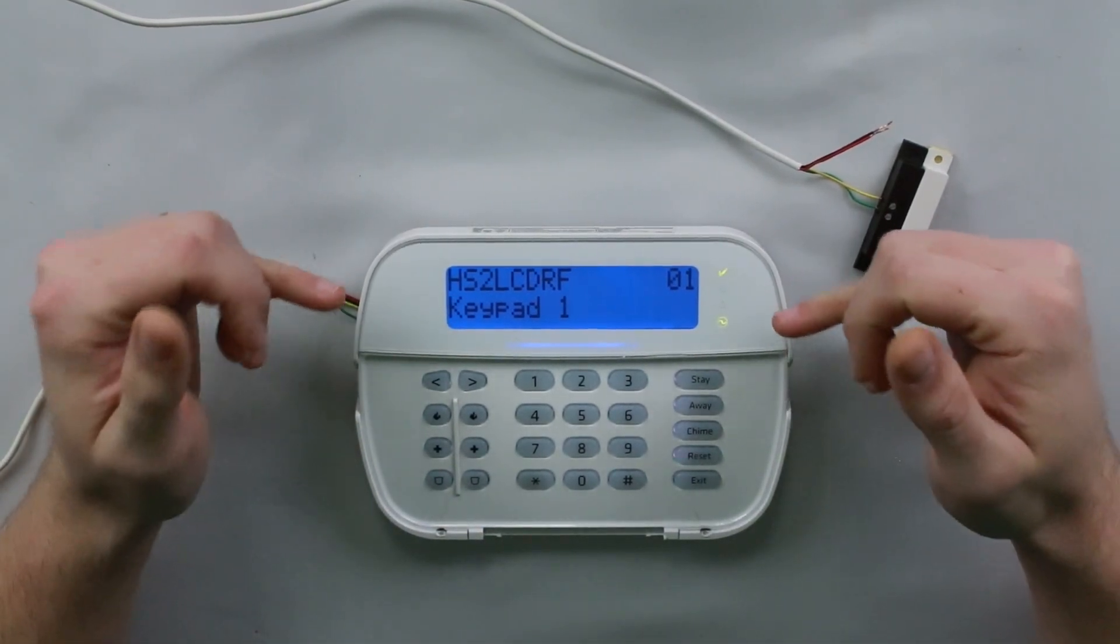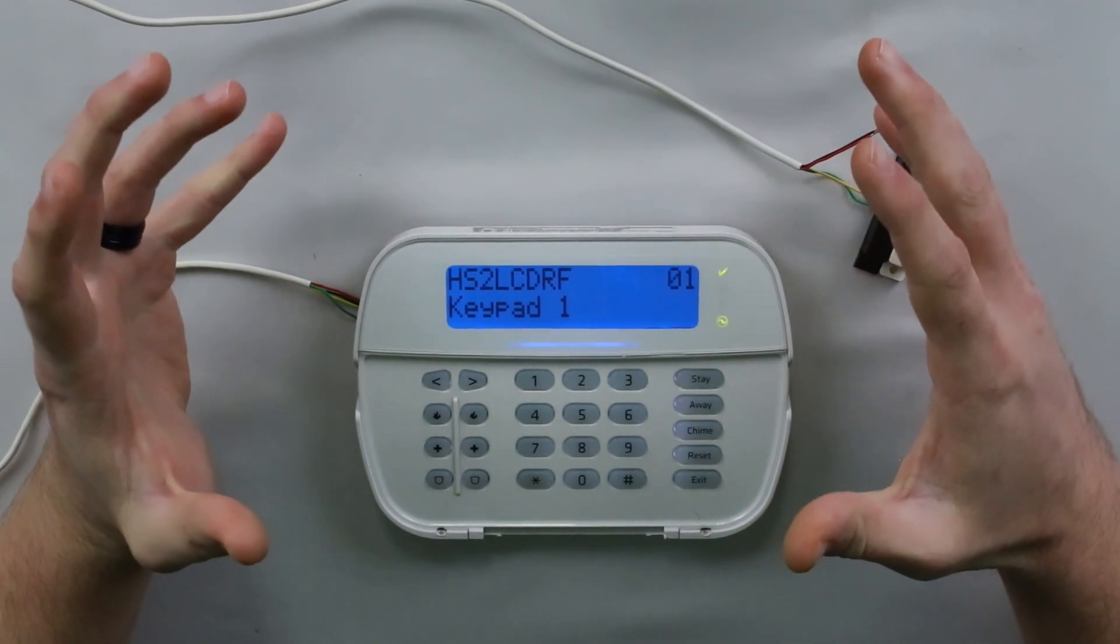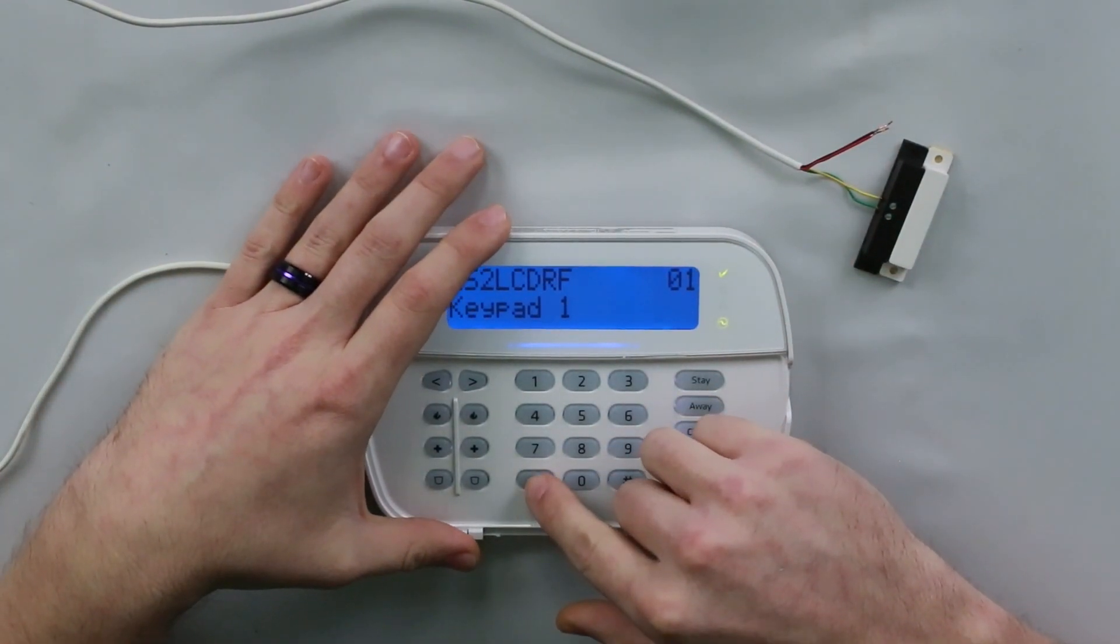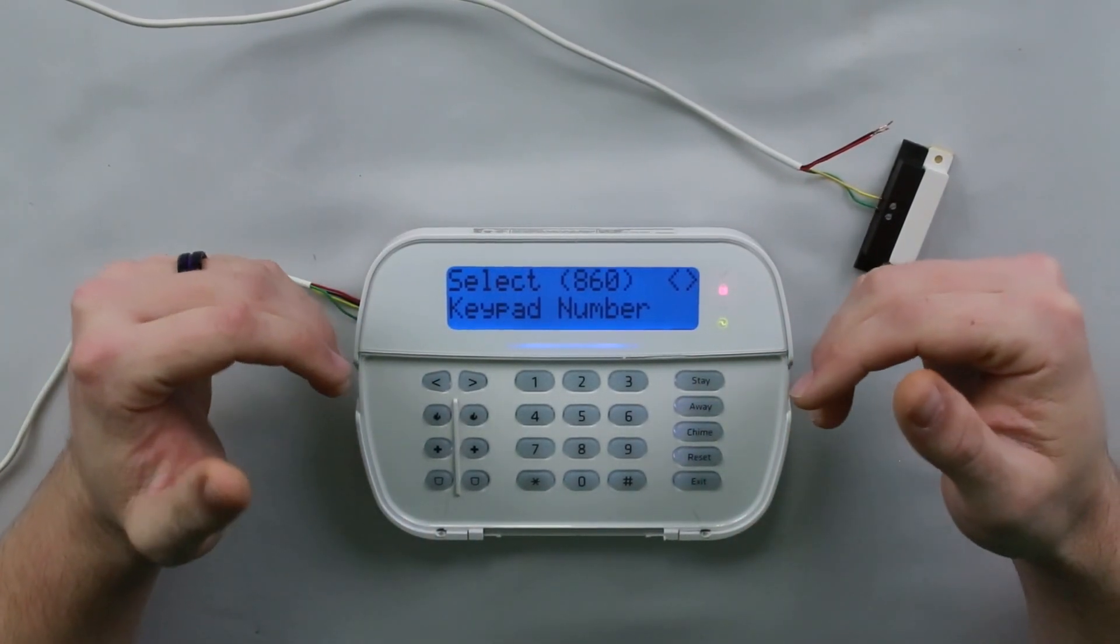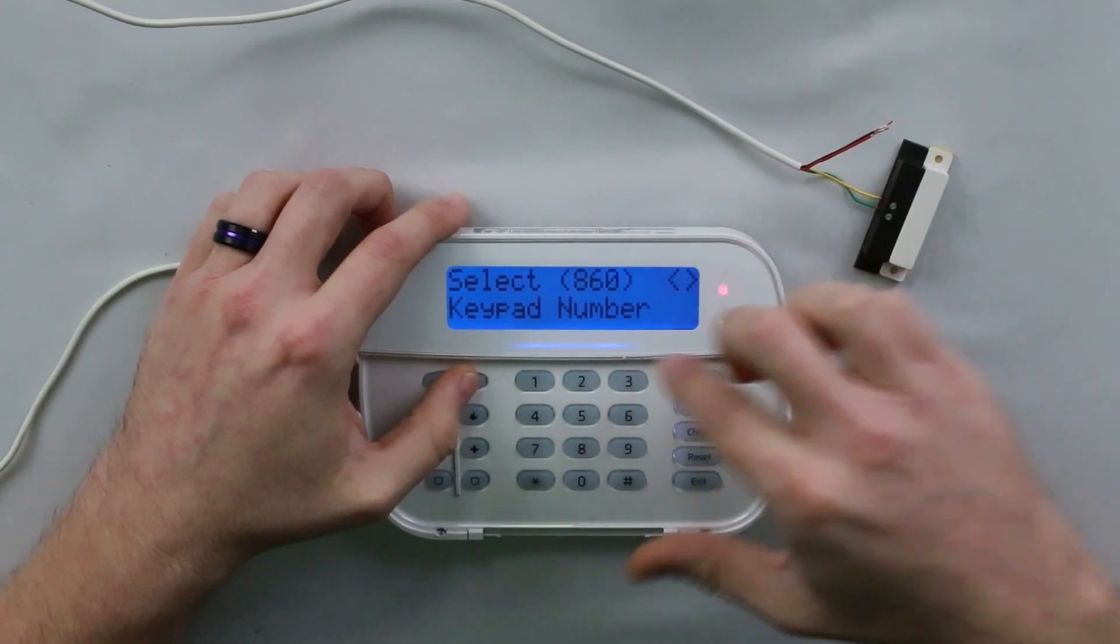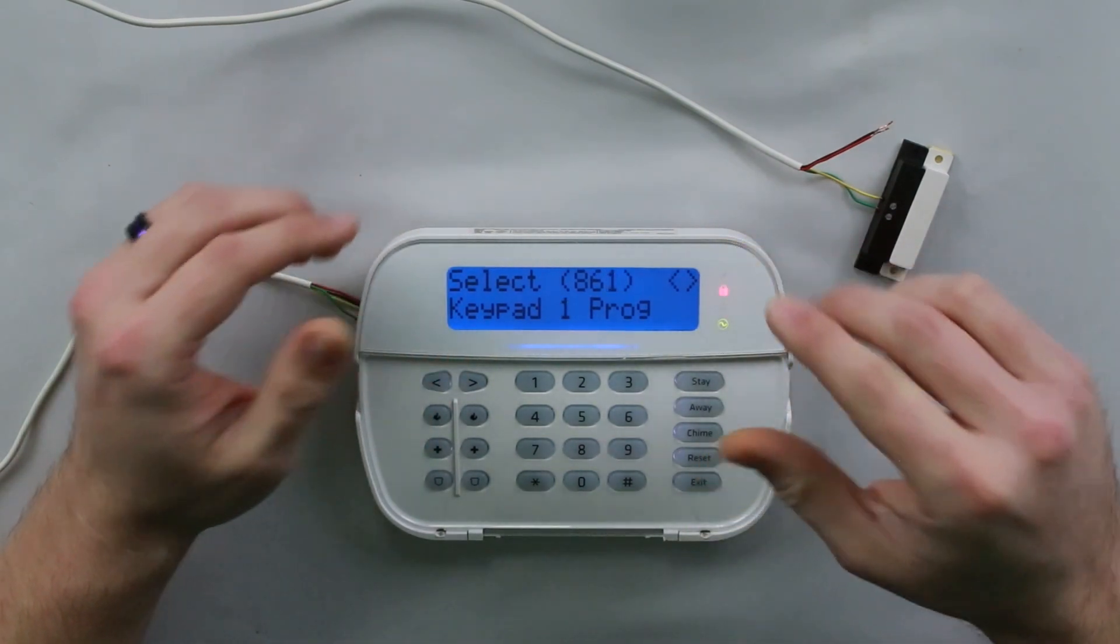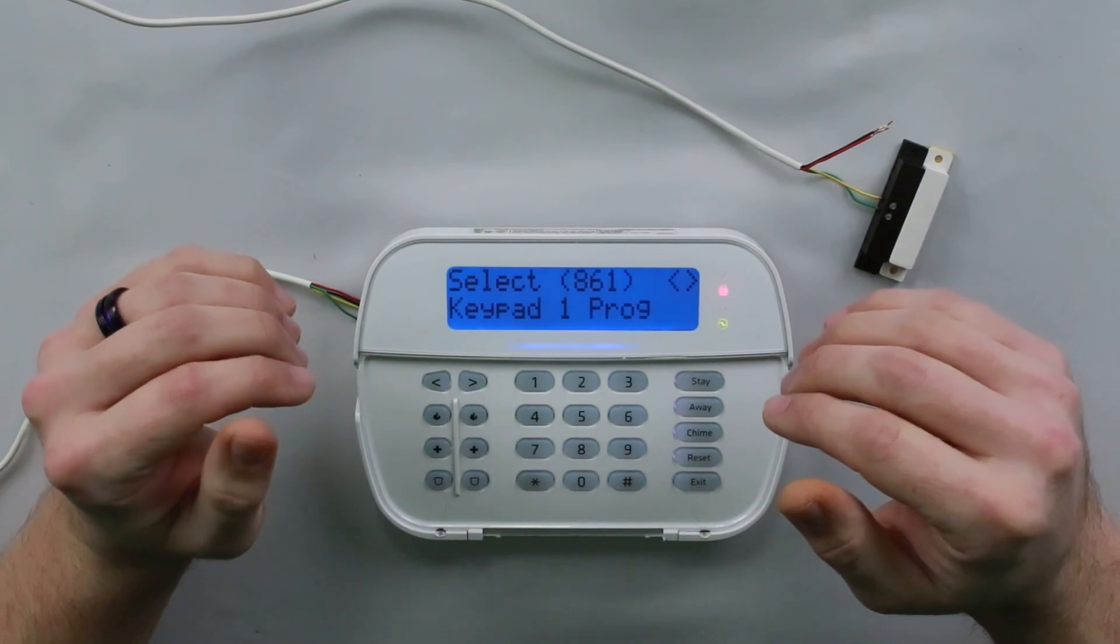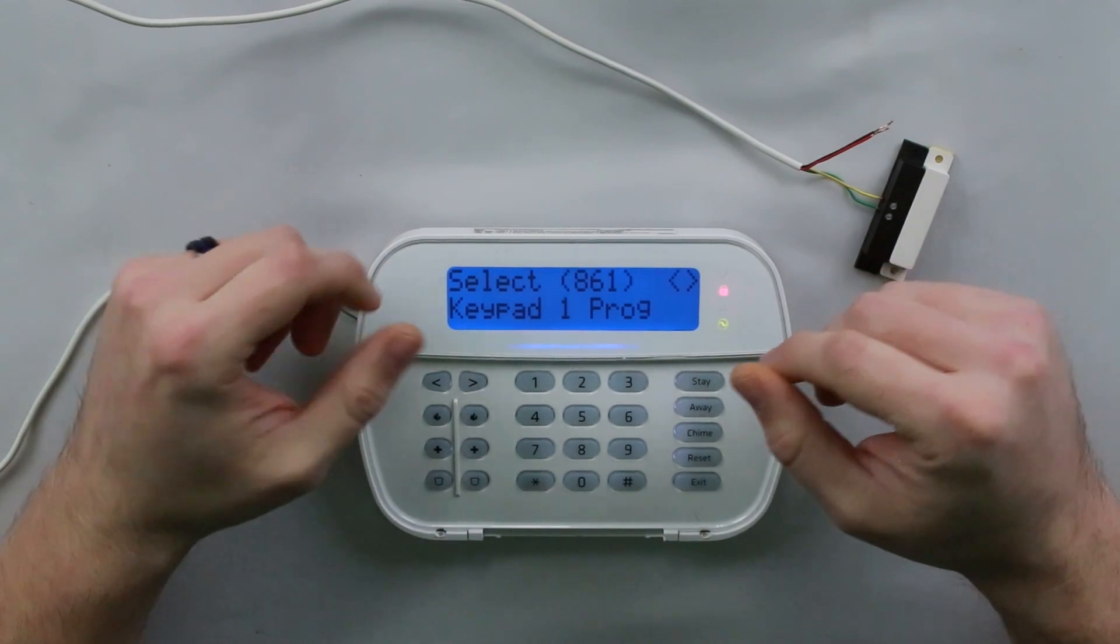Then go to section eight six zero. This is going to show you the keypad number for the current keypad that you're working on. I only have one keypad, so it makes it simple. It's keypad one. So I'm going to press pound here now that I know the number of my keypad. From here, all you have to do is scroll over to find the keypad that you're looking for. Sections eight six one to eight seven six are all of the keypad programming sections.